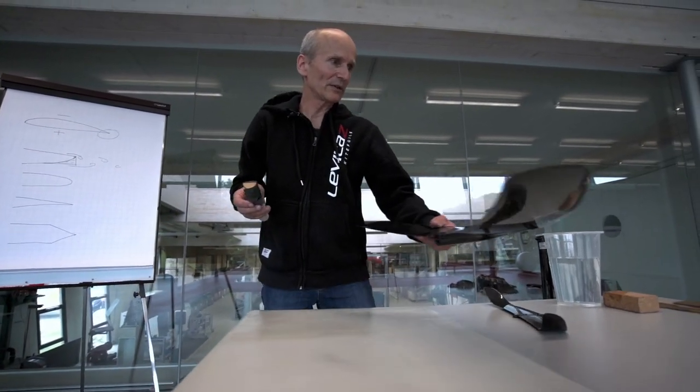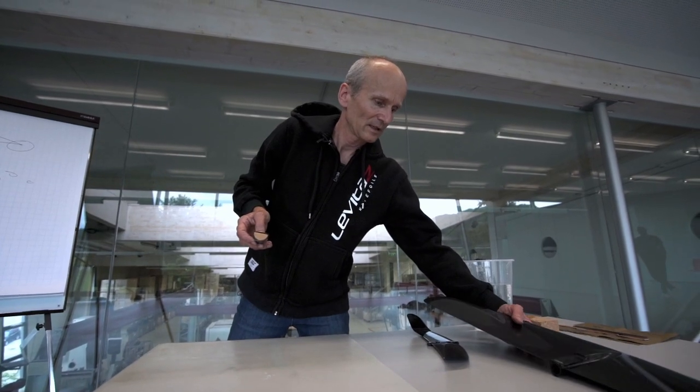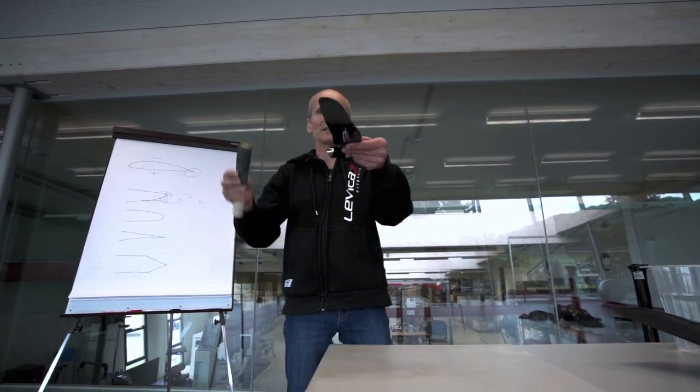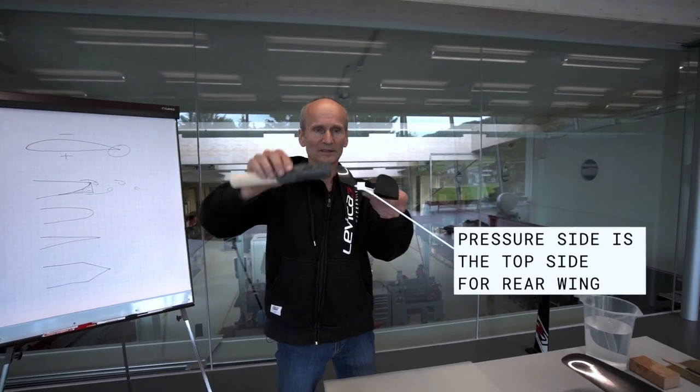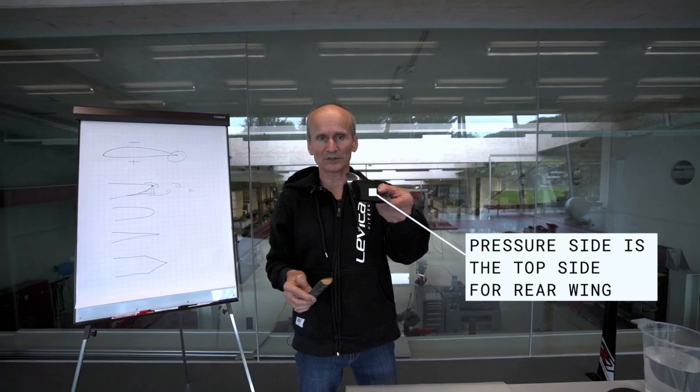And for the rear foil we have the opposite. So it flies through the water like this and we have the pressure side on the top side and the suction side on the bottom side.